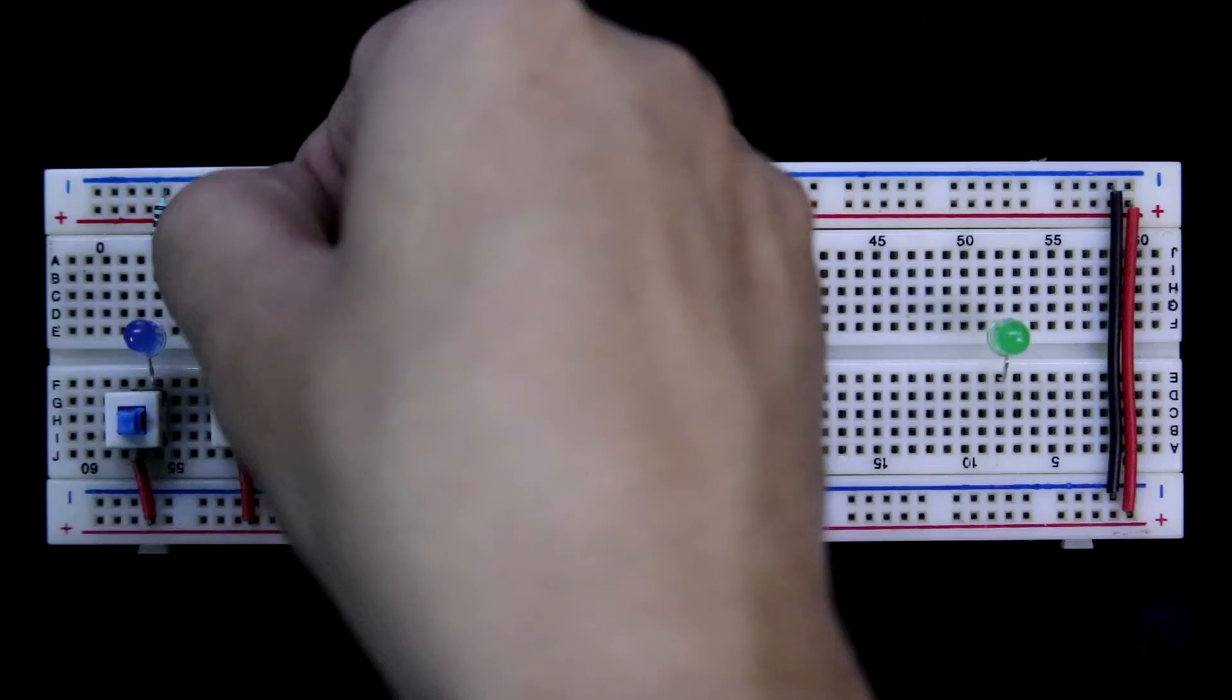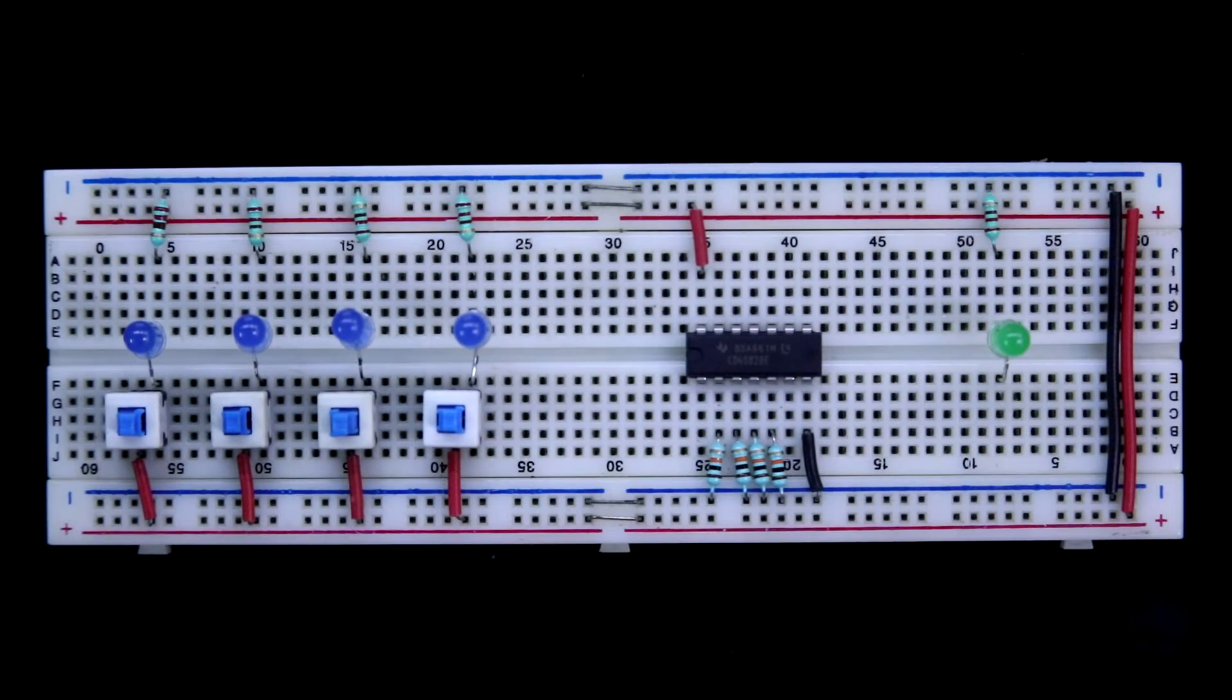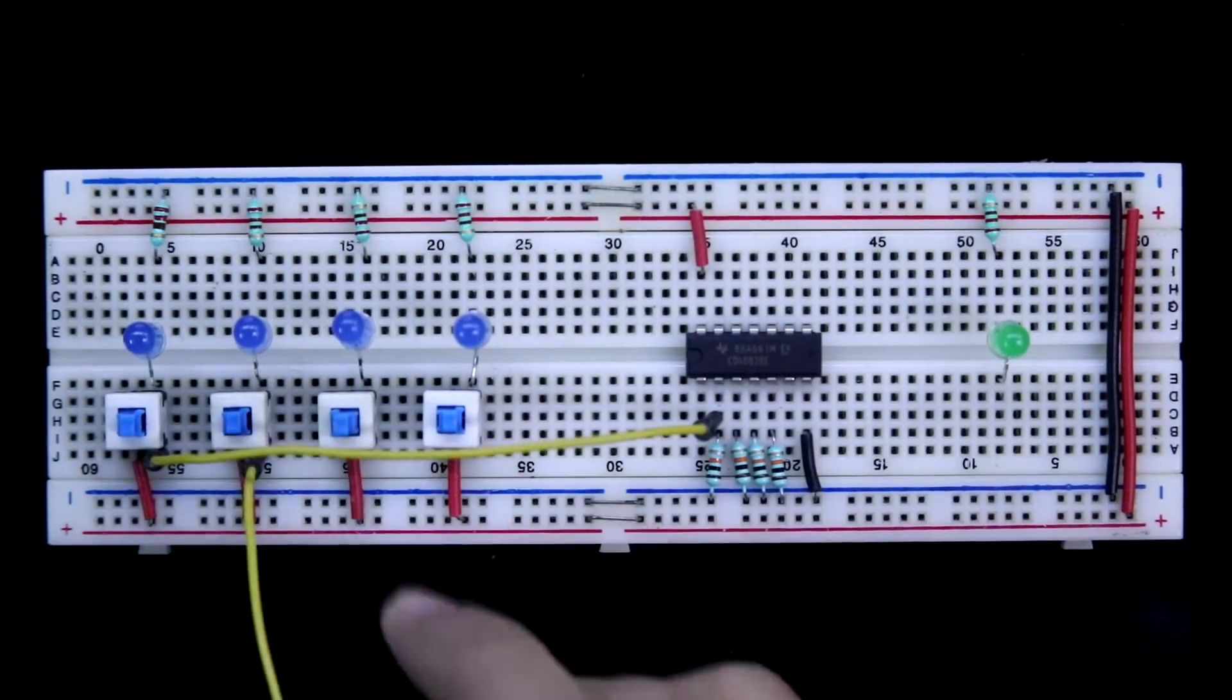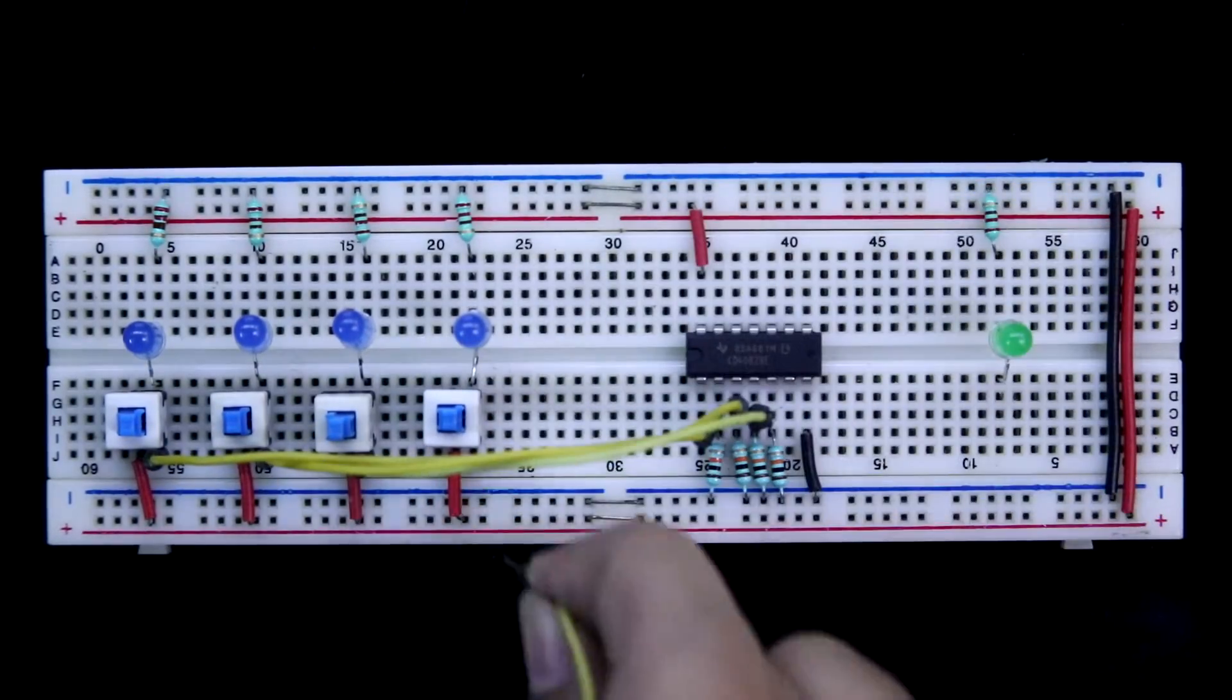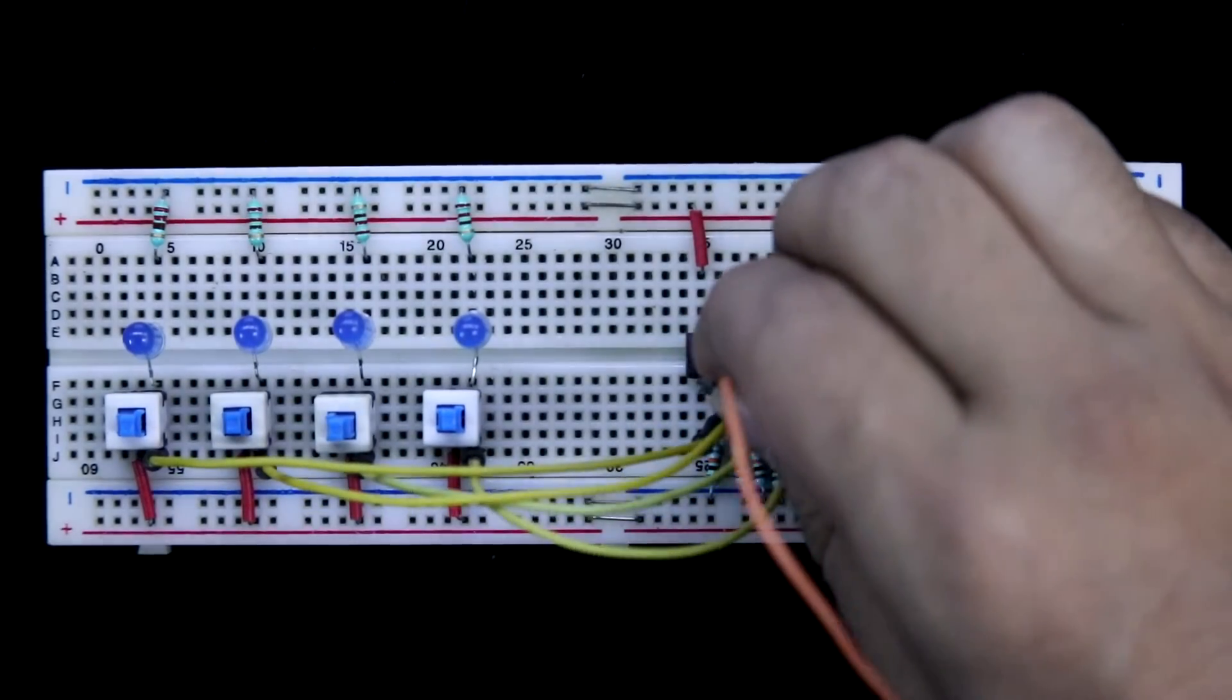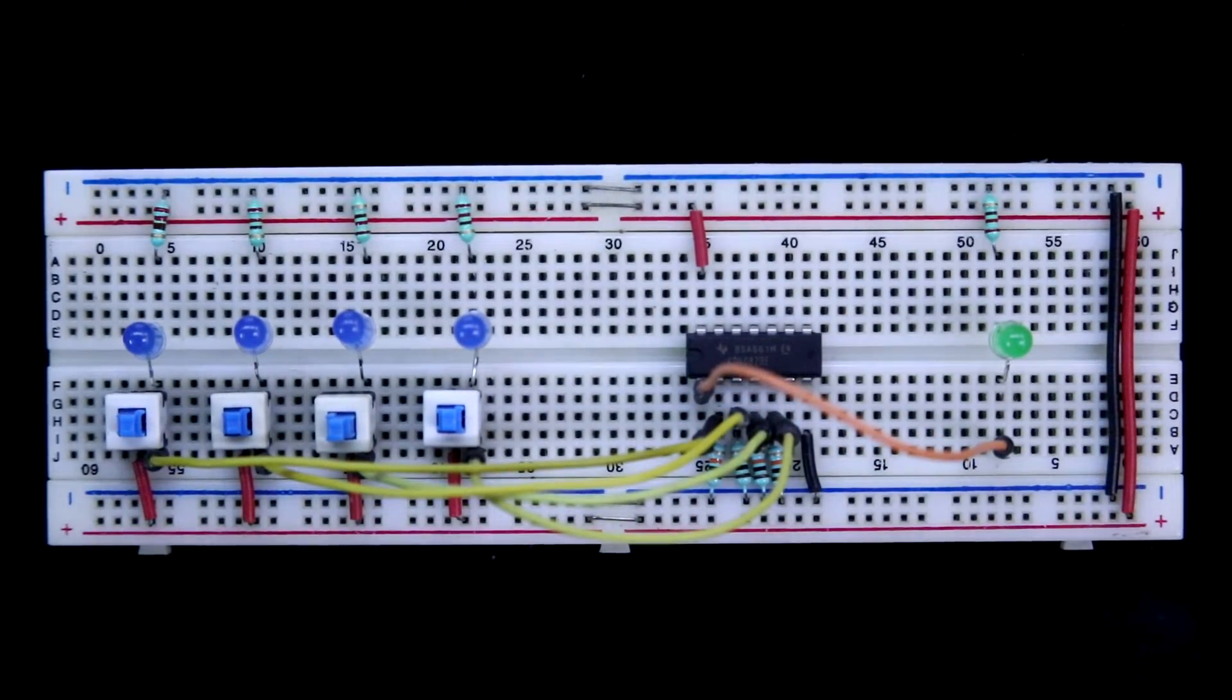220 ohms resistor is connected with negative pin of the LED. Now connecting the switch to the IC. Switch A to pin 2, switch B to pin 3, switch C to pin 4, switch D to pin 5. Pin number 1 is connected to the positive pin of output LED. So this is our connection.